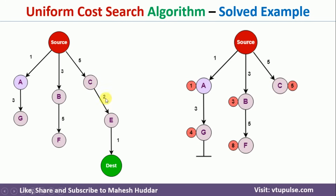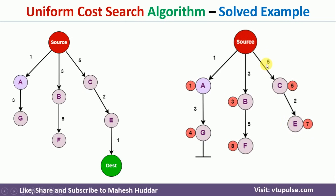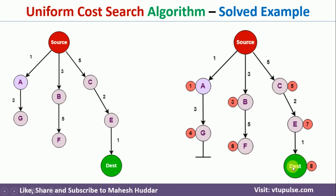From C there is only one path, C to E, with a cost of 2. So the cumulative cost of E becomes 5 plus 2, which equals 7. Now between E and F in the priority queue, E has the lower value, so we consider E. From E we go to the destination node with a cost of 1, making the total cost 5 plus 2 plus 1, which equals 8.